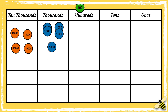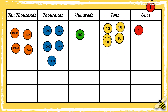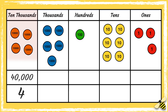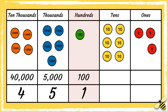Here's another one. What number is shown on the grid? Pause the video to give yourself time to work out the answer, press play when you're done. We have four ten thousands, five thousands, one hundred, six tens and three ones, so the number is forty five thousand one hundred and sixty three.